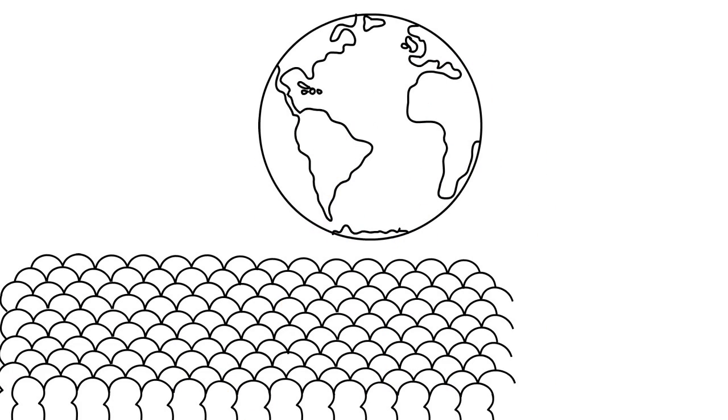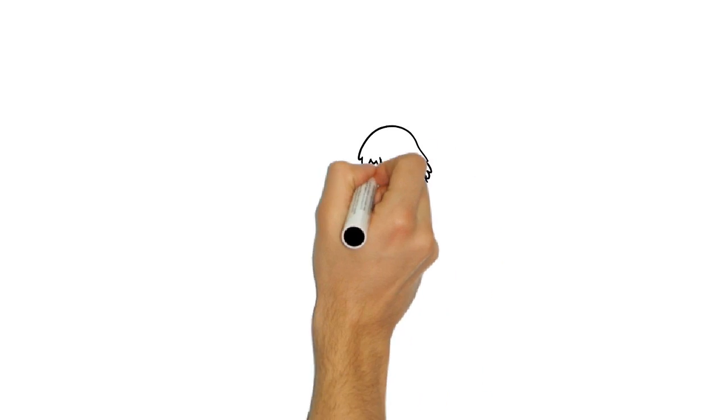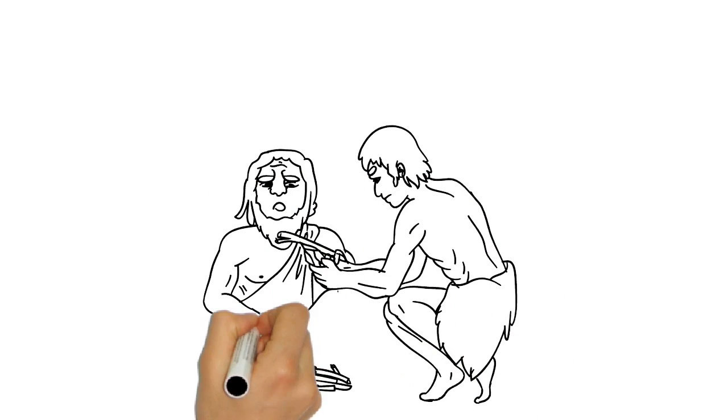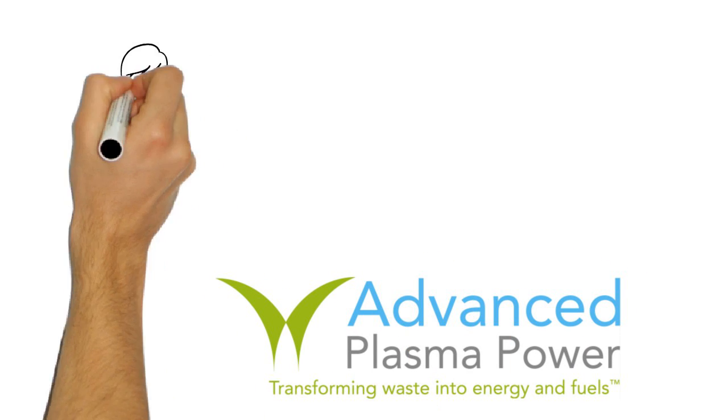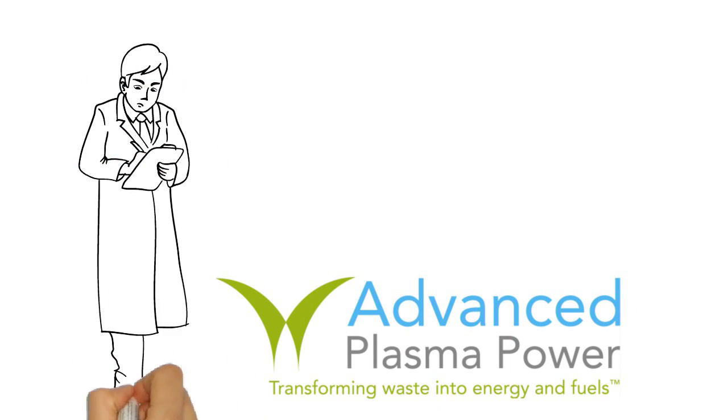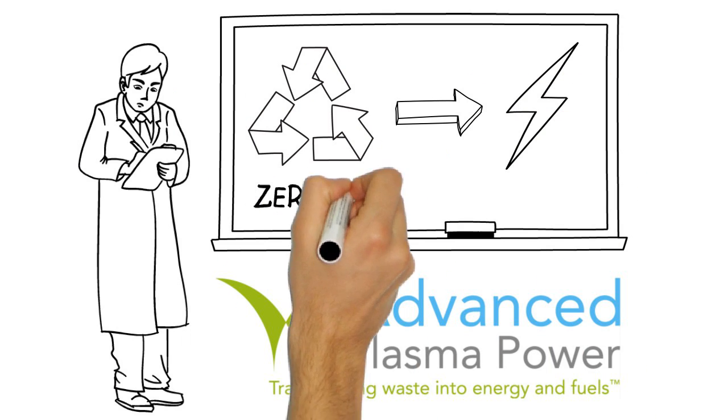This is the Earth. In its long life, over 108 billion people have called it home, with each generation striving to find the best way to produce energy and manage waste. Advanced Plasma Power is building on a history of innovation to bring you clean, renewable energy and a zero-waste future.